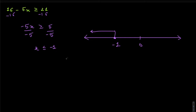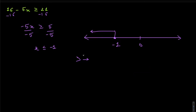A quick trick: if the inequality sign is pointing towards the left, draw the arrow towards the left. If it's greater than — pointing towards the right — draw the arrow to the right. That's a short trick to save time.